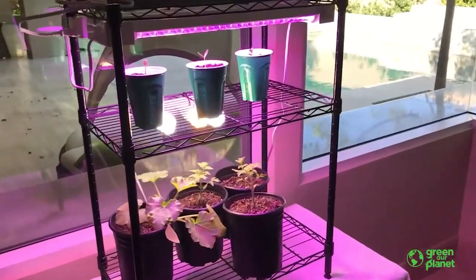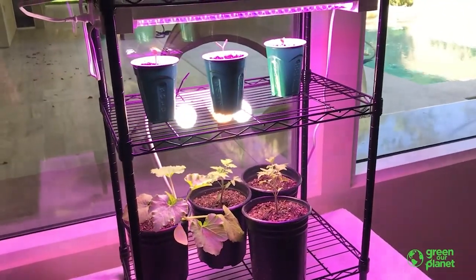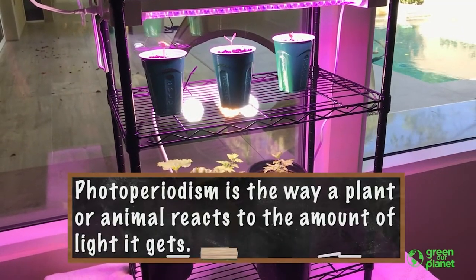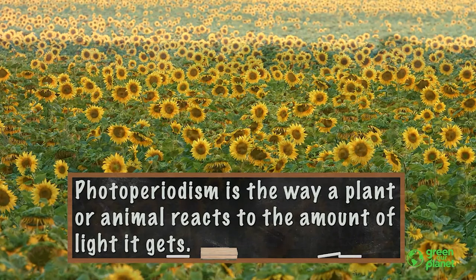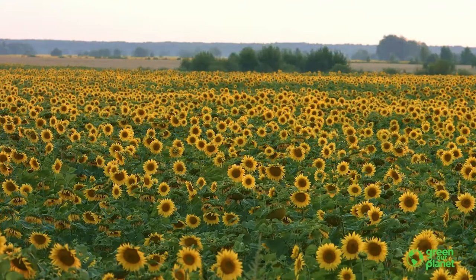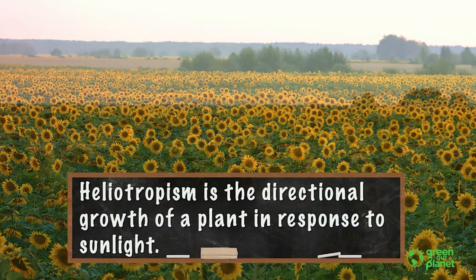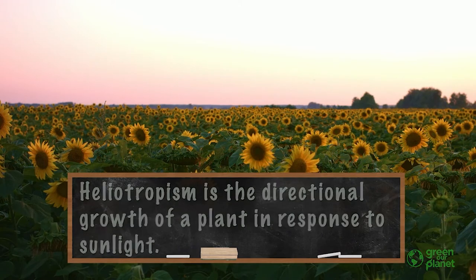The plant's change in its life cycle triggered by the change in daylight hours is called photoperiodism. When plants actually move towards the sun, such as how sunflowers follow the sun throughout the day, that's called heliotropism.